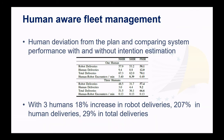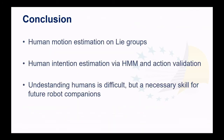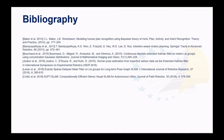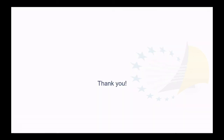To conclude, we presented human motion estimation on Lie Groups and intention estimation using HMM and action rationalization. In general, understanding humans is difficult — even humans are not always good at this, especially since we can behave irrationally. But this is a necessary skill for future robot companions, and with a lot of data, this will probably become easier and easier. Thank you for your time.